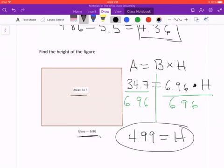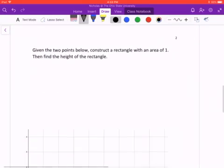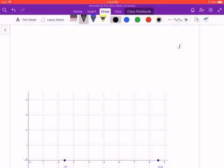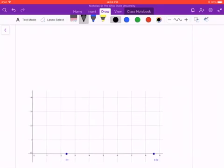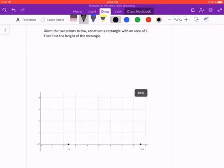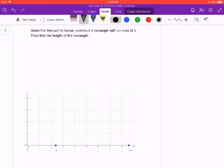So 4.99 is our height. Okay, so you just plug the values in and get the h by itself. And the last one we're going to look at today, it says, given the two points below, sorry, I'm going to need to zoom out here. Given the two points below, construct a rectangle with area of 1 and then find the height of the rectangle.